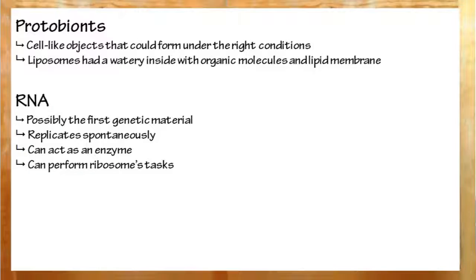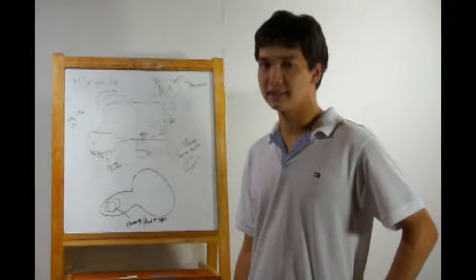Evidence for this includes the double layer of membrane, which mitochondria and chloroplasts have, and also they have their own DNA. Alright, that's all for now. Again, I'm Brian Currier. See you next time.